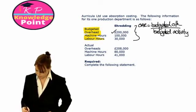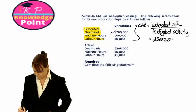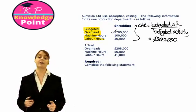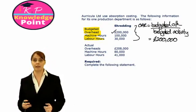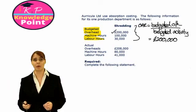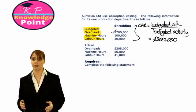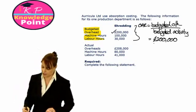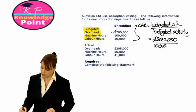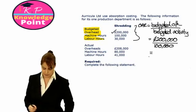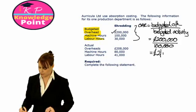Our overhead absorption rate is our budgeted overheads divided by our budgeted activity. Our budgeted overheads are £200,000. We use machine hours because it is a machine-intensive department, giving us an overhead absorption rate of £2 per machine hour.